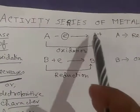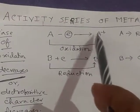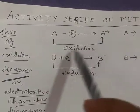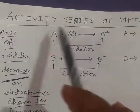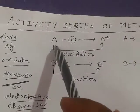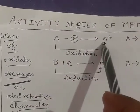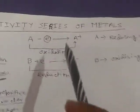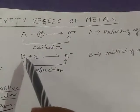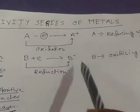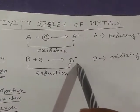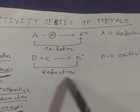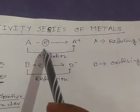When any element donates one electron, there will be generation of the corresponding positive ion. This release of electron is called oxidation. So if element A is oxidized to A⁺ by releasing one electron, this electron is accepted by another element B, resulting in the formation of the anion B⁻. This process of B to B⁻ formation is called reduction.